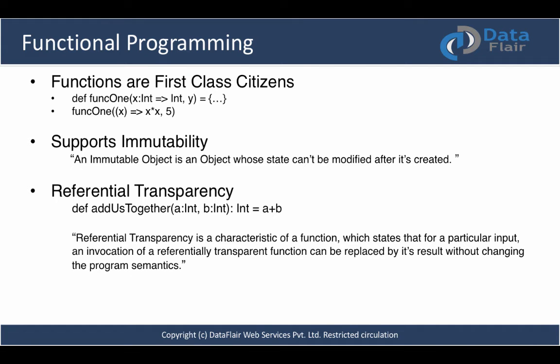Referential transparency is a characteristic of a function which states that for a particular input, an invocation of a referentially transparent function can be replaced by its result without changing the program semantics. Using our `addUsTogether` function with two and three as parameters — you can assume we get five. We can write `val expected5 = 5` without affecting other parts of the program semantically.